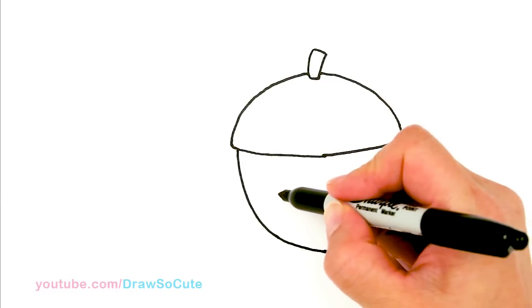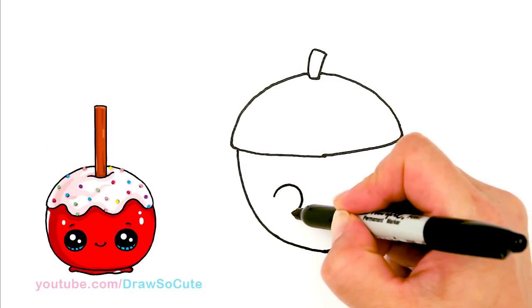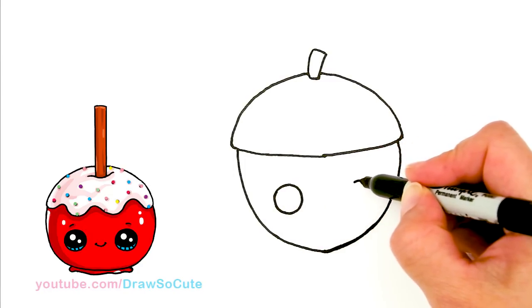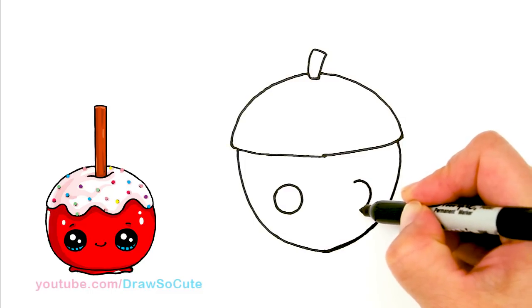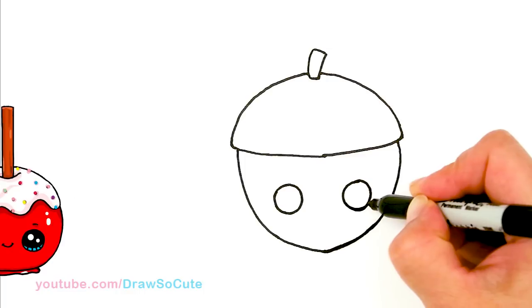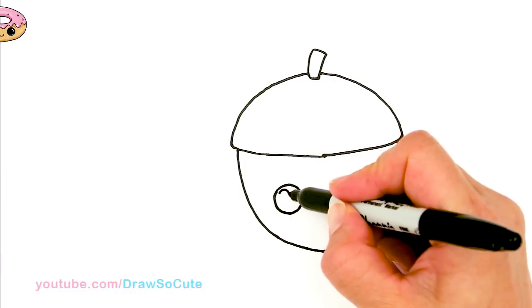So right here, I'm going to draw a circle for some Draw So Cute eyes. And same thing on the other side. So about right here towards the edge. Another circle. Another wobbly circle. Okay. So I'm going to come in here and make them Draw So Cute eyes.